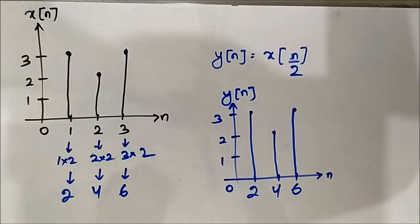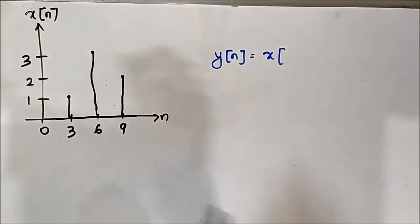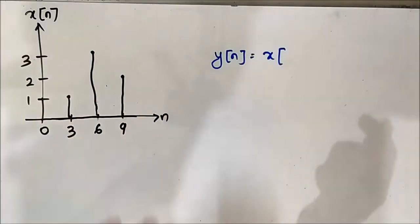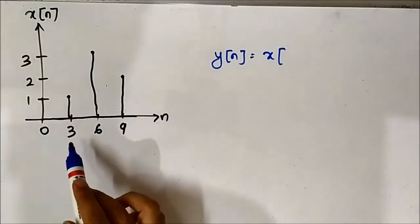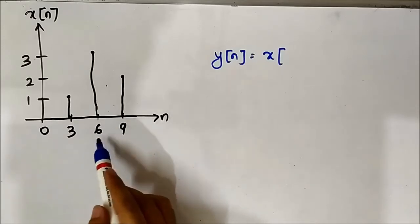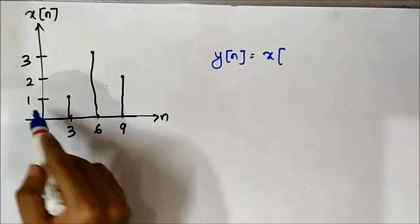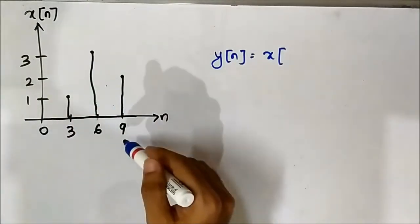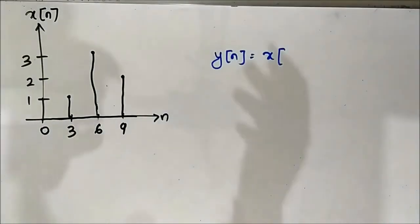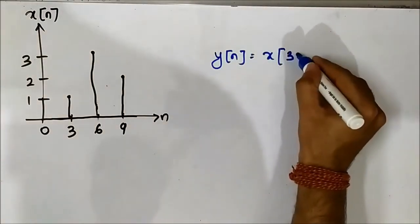Now we'll discuss a second question on time scaling of discrete time signals. This is the original reference signal in discrete time format. The time instances are n=3, n=6, and n=9. At n=3 the value of x[n] is 1, at n=6 it is 3, and at n=9 it is 2. First, let's perform the operation x[3n].